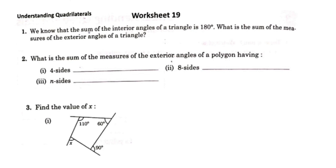We know that the sum of the interior angles of a triangle is 180 degrees. What is the sum of the measures of the exterior angles of a triangle? We will explain the sum of the exterior angles.